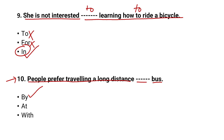The tenth question: 'People prefer traveling a long distance dash bus.' The correct option is 'by' — 'by bus.' The preposition 'at' is used for time expressions like 'I will be there at 6 PM.' 'With bus' is also incorrect. We travel by bus, by train, by airplane — so option A, 'by bus,' is correct. That concludes this video.